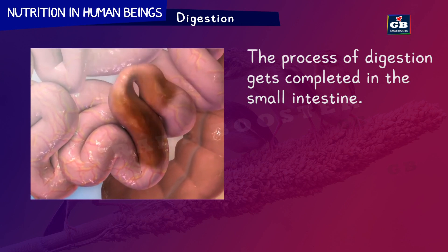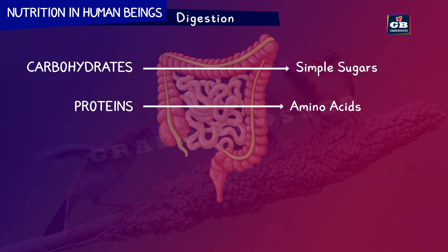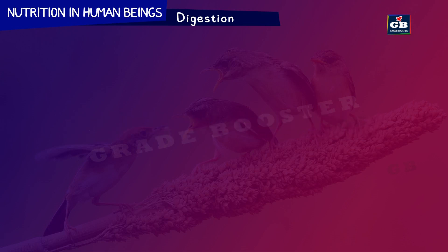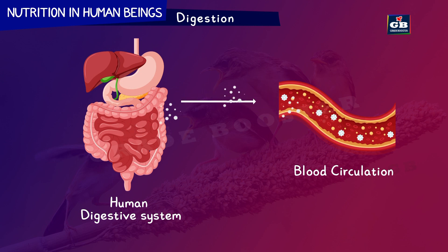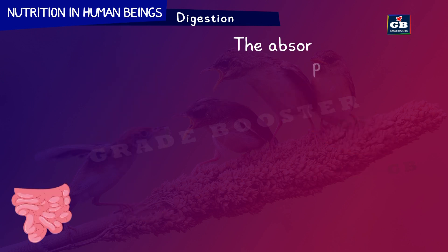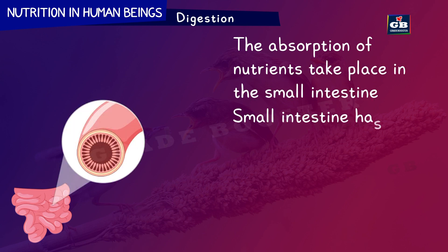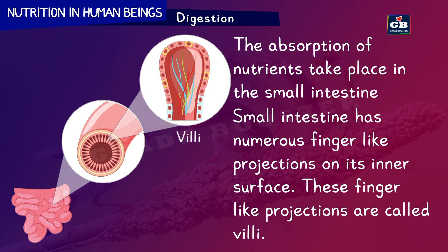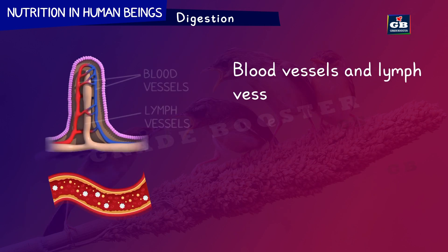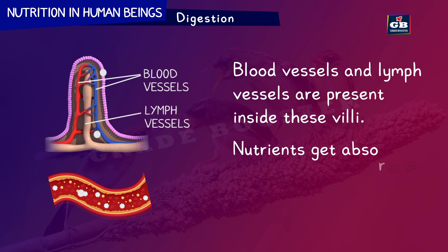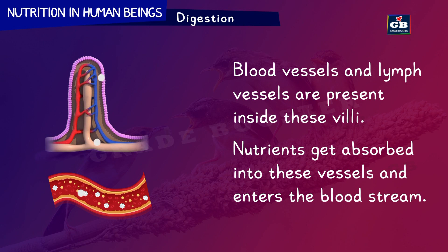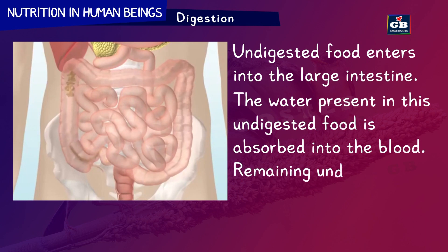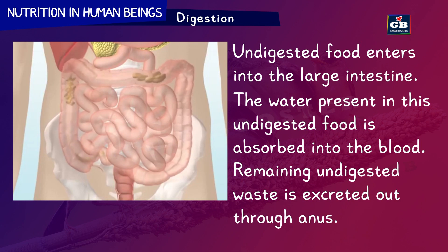In the complete process of digestion, carbohydrates are converted to sugars, proteins are converted to amino acids, and fats are converted to fatty acids and glycerol. The nutrients formed during digestion are absorbed into the blood circulatory system in the small intestine. The wall of the small intestine has numerous finger-like projections on its inner surface called villi. Blood vessels and lymph vessels are present inside these villi, and nutrients get absorbed into these vessels and enter the bloodstream. Undigested food enters the large intestine, where the water present in it is absorbed into the blood.